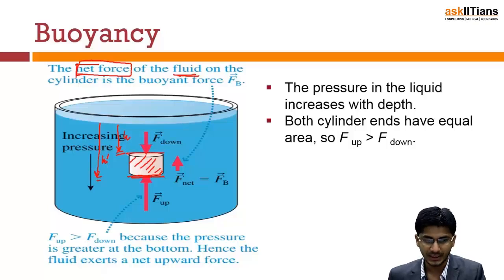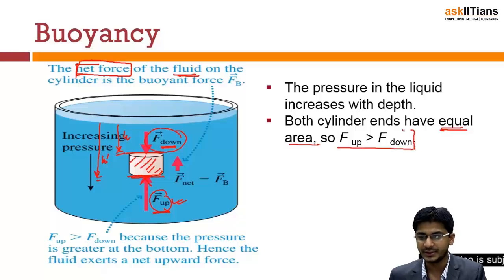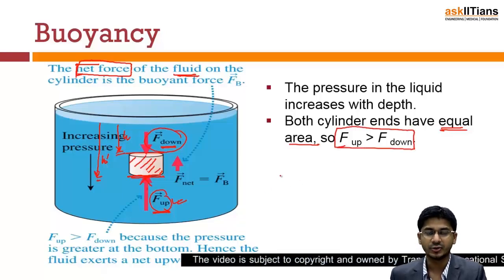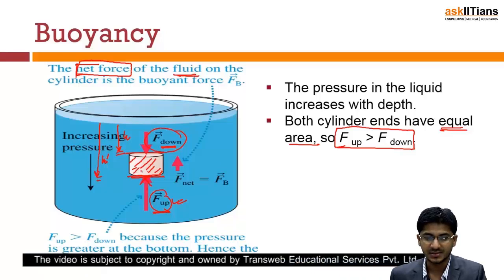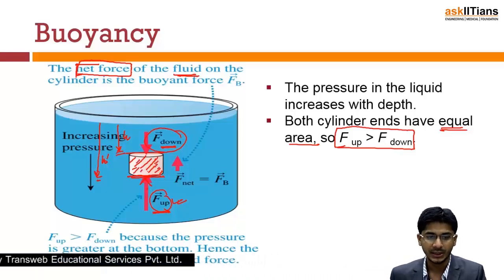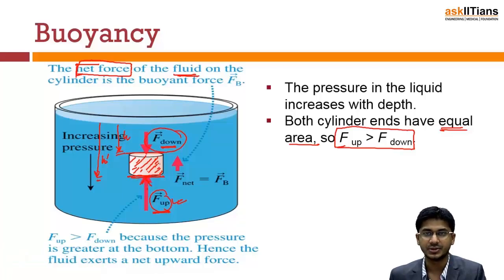Now if they both have the same cross section area, the force that will be acting at this point F_down will be smaller than F_up that is acting at the bottom, because the pressure here is greater which implies that the force also is greater at this point. Since the force at this point is greater than the force here, there is an upward force acting. The upward force acts on a body that is immersed in a liquid, partly or wholly. There is a pressure from the bottom that is greater than the pressure from the top, that's why there is an upward pressure.